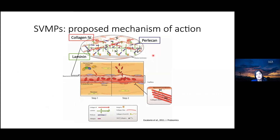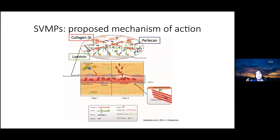In studies of local hemorrhage caused by SVMPs, a two-step model has been proposed that explains the action of hemorrhagic SVMPs. In the first step, the SVMP binds to the capillary and hydrolyses critical structural components of the basement membrane and extracellular matrix, particularly type IV collagen, laminin, and perlecan. This results, in a second step, in the mechanical weakening of the extracellular matrix, leading to the capillary becoming susceptible to rupture due to biophysical hemodynamic forces in the microcirculation.